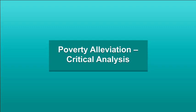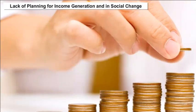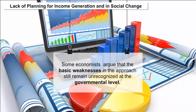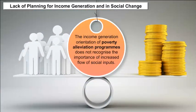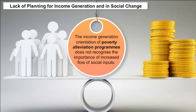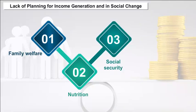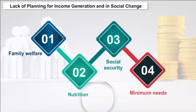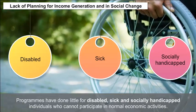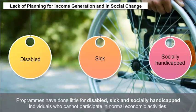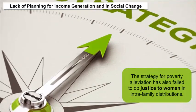Poverty Alleviation — Critical Analysis: Some economists argue that basic weaknesses in the approach remain unrecognized at the governmental level. The income generation orientation of poverty alleviation programs does not recognize the importance of increased flow of social inputs through family welfare, nutrition, social security, and minimum needs programs on a long-term basis. Secondly, the programs have done little for disabled, sick, and socially handicapped individuals who cannot participate in normal economic activities. The strategy for poverty alleviation has also failed to do justice to women in intra-family distributions.